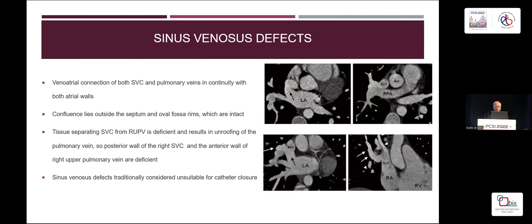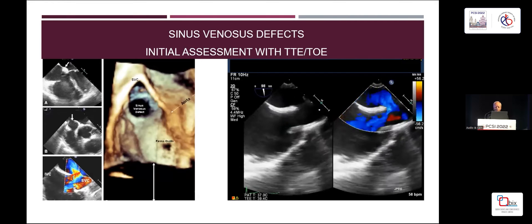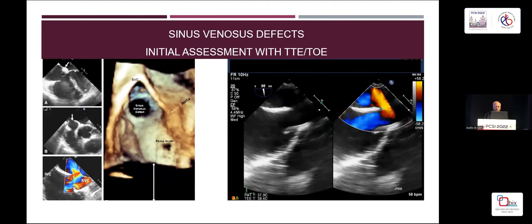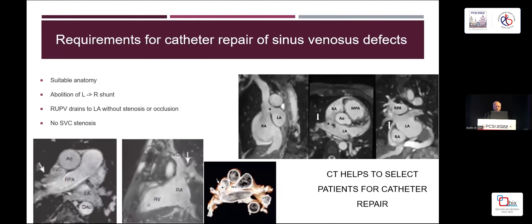The initial assessment after the normal echocardiogram is by transesophageal echo. You can see here a sinus venosus defect with left-to-right shunting and overriding of the superior vena cava. It's invariably associated with partial anomalous pulmonary venous drainage. The right upper pulmonary vein may drain in different locations — at the SVC-RA junction, a little bit higher up, or even further higher up. That's an important part of the evaluation to look at defect suitability for covered stent implantation.